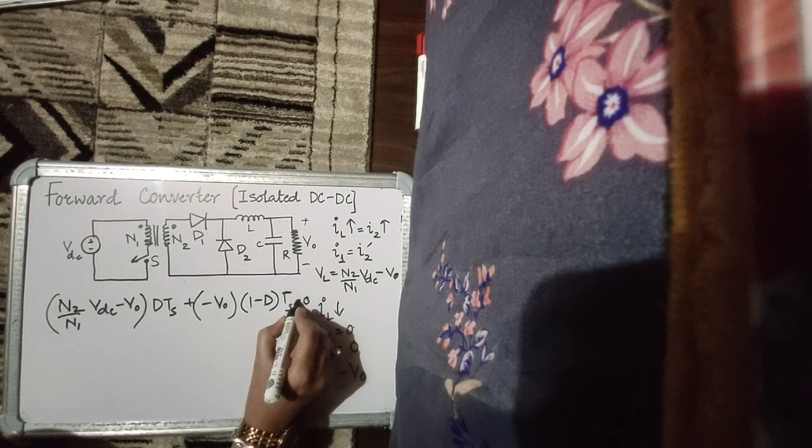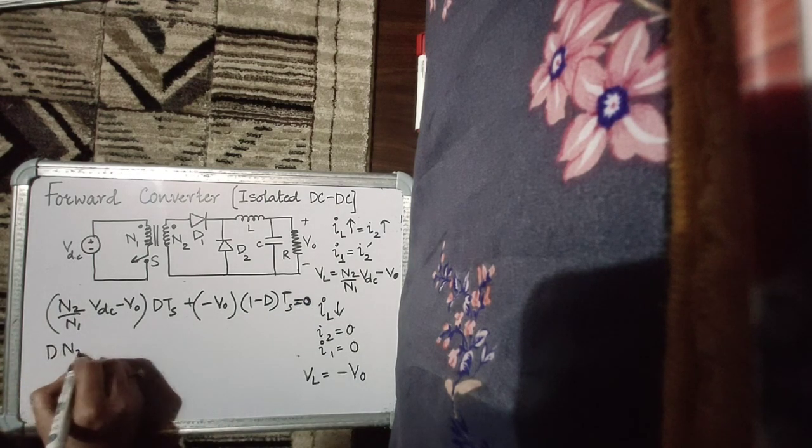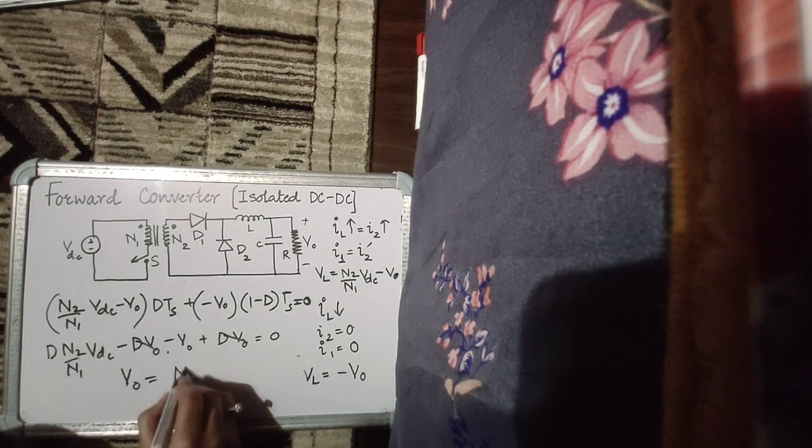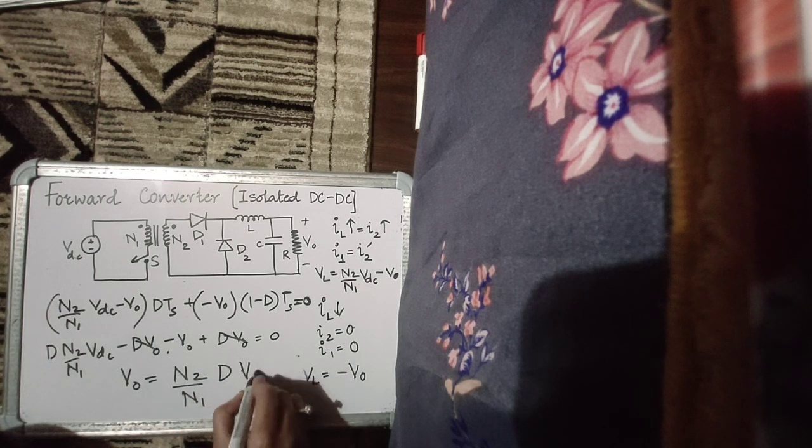Applying volt-second balance on the inductor: during interval DTS the voltage is (N2/N1)·VDC − V0, and during the remaining interval (1−D)TS it is −V0. Setting the net to zero: (N2/N1)·VDC·D − D·V0 − V0 + D·V0 = 0, which gives V0 = (N2/N1)·D·VDC. This equation confirms it is a buck-derived converter — with duty ratio between 0 and 1, we get a step-down of the input voltage.